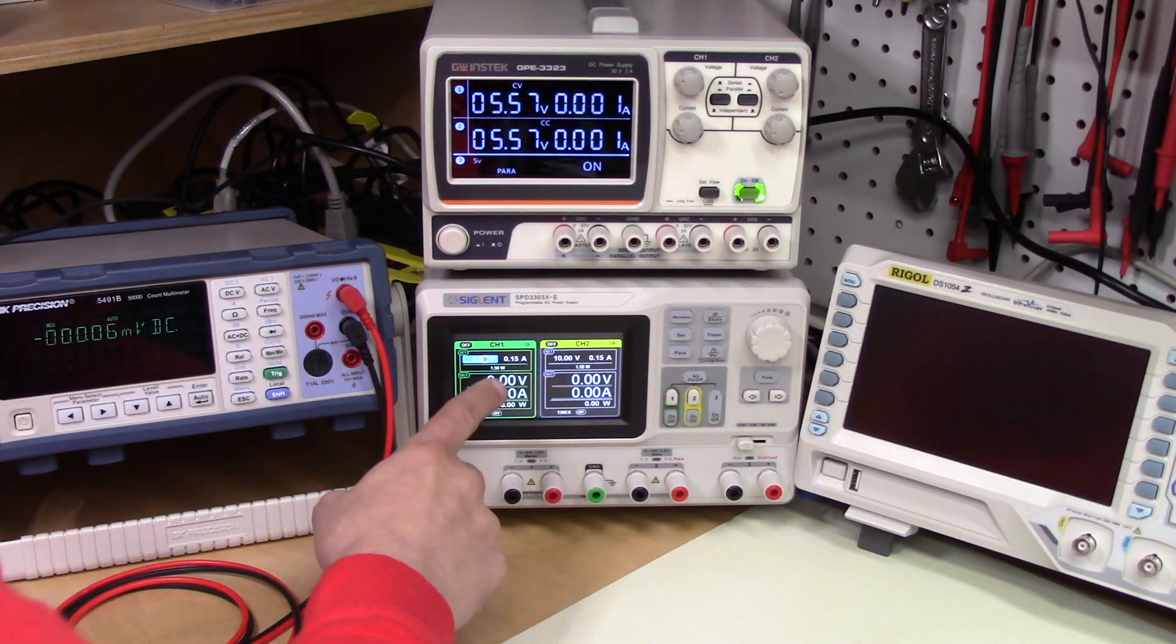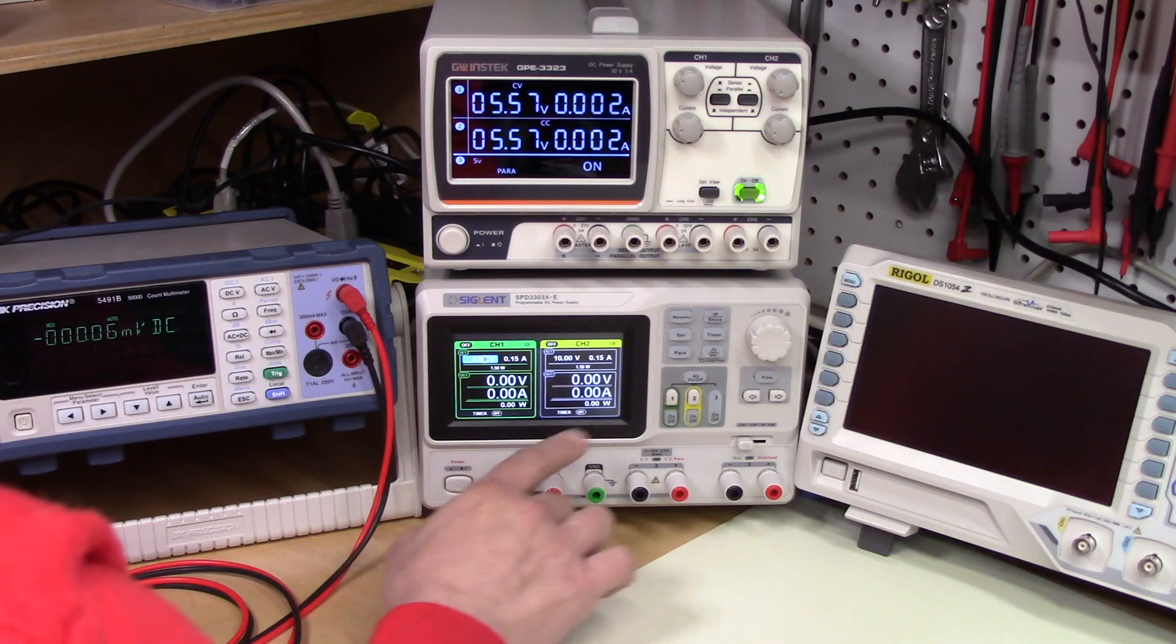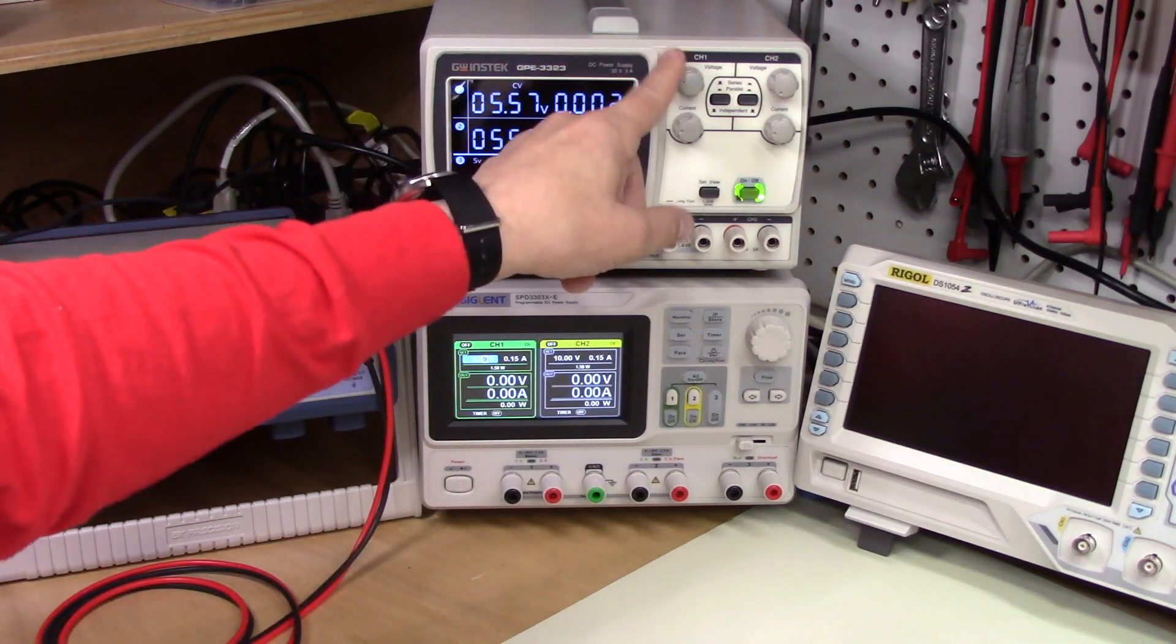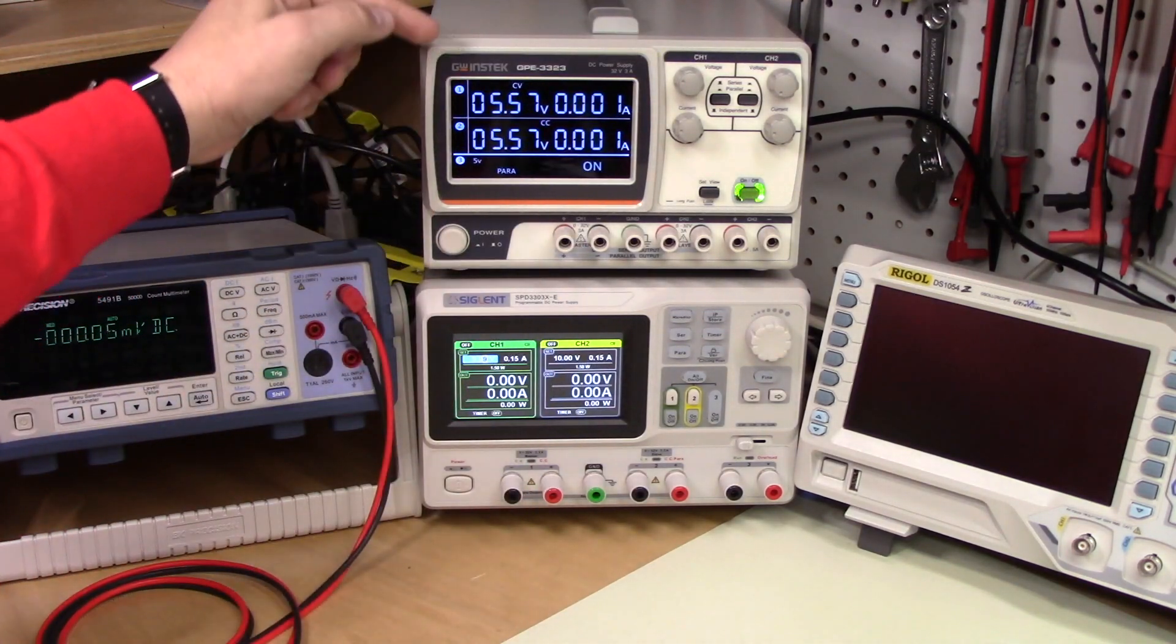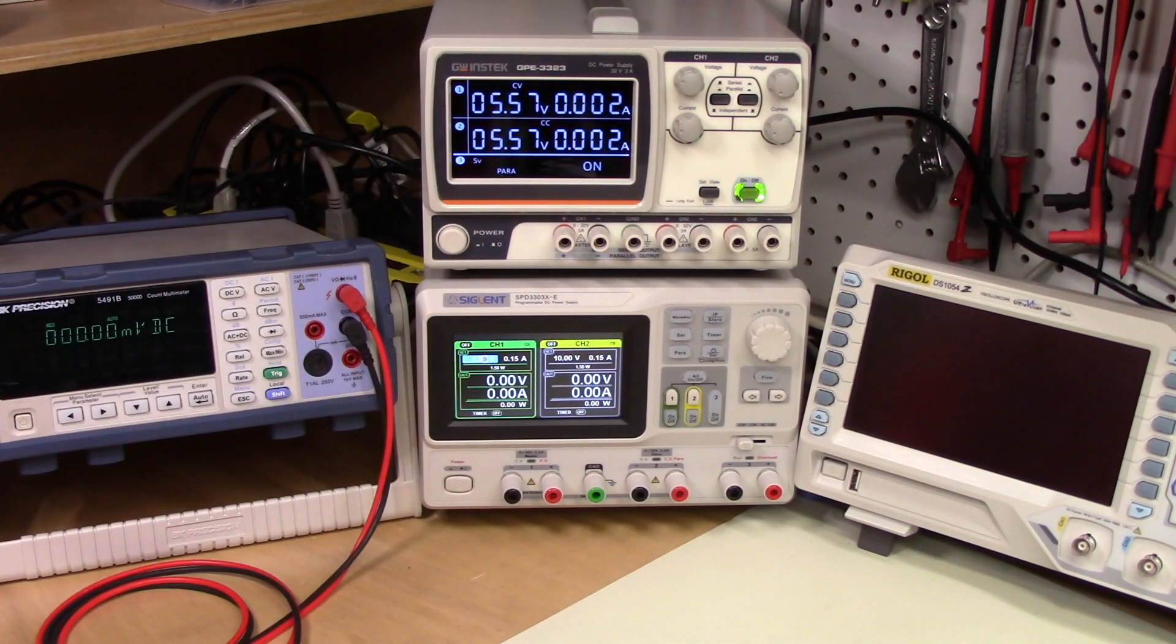And one other thing is channel one, channel two, channel one, channel two. On this we have channel one, channel two going in the horizontal direction. But the display is up and down. And you have channel one voltage and current.